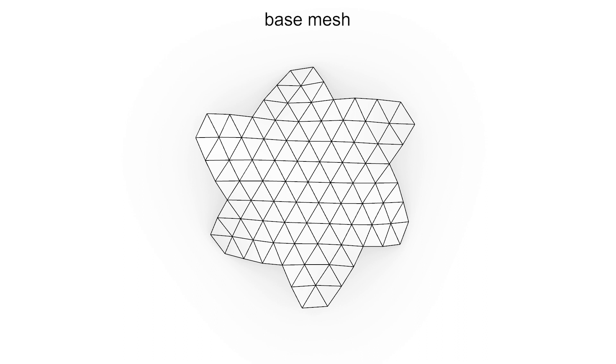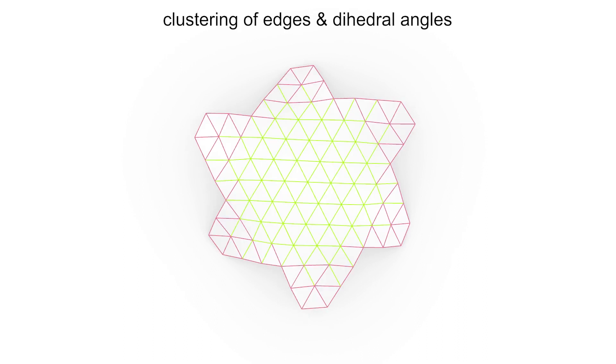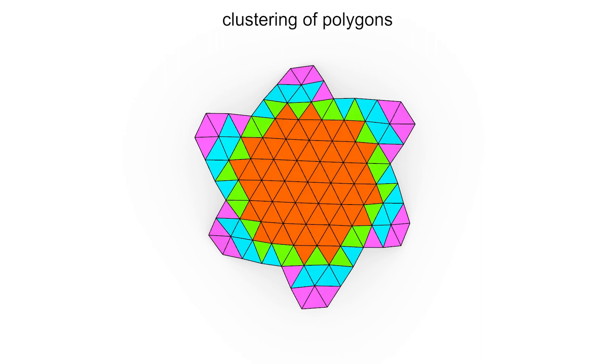Our approach takes a freeform surface as input. We map a 2D tessellation onto the surface to initialize a base polygonal mesh. We then optimize the mesh vertices to cluster edges and dihedral angles, followed by polygons.